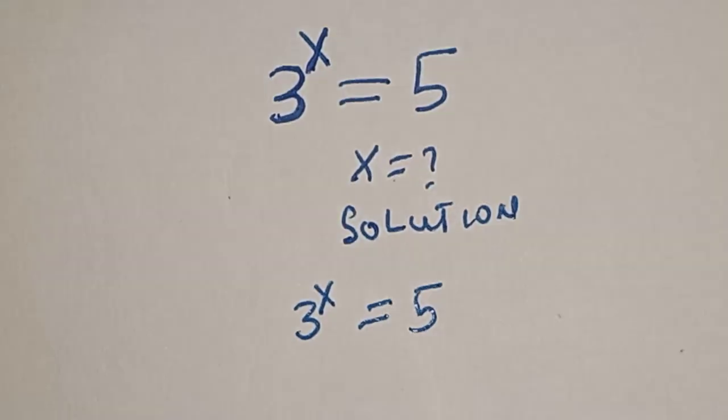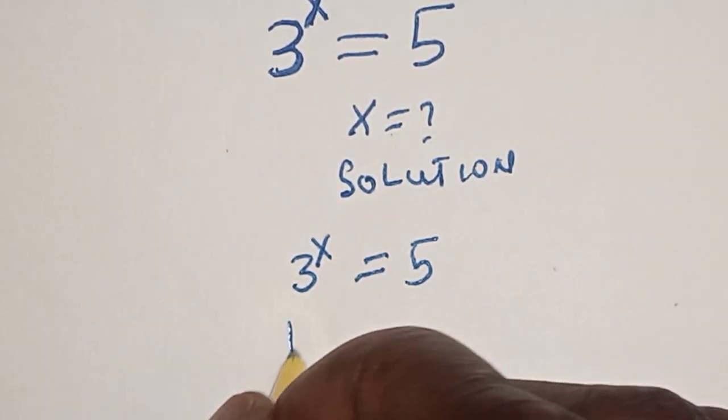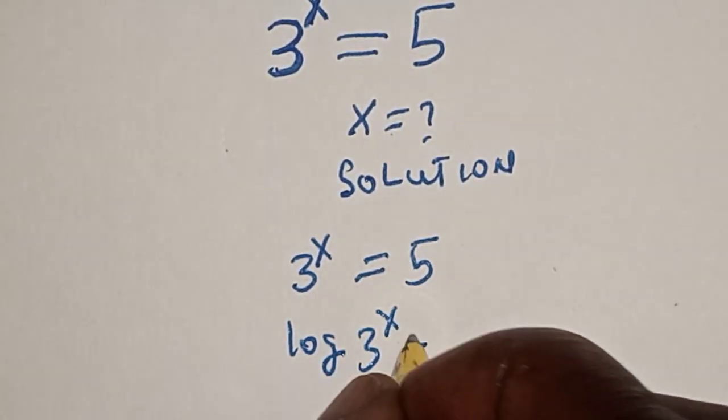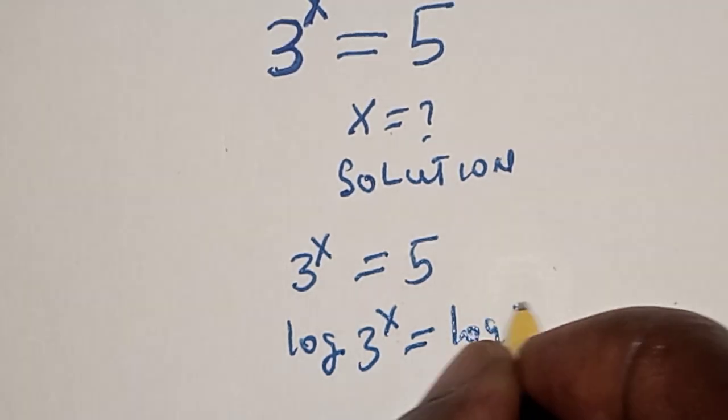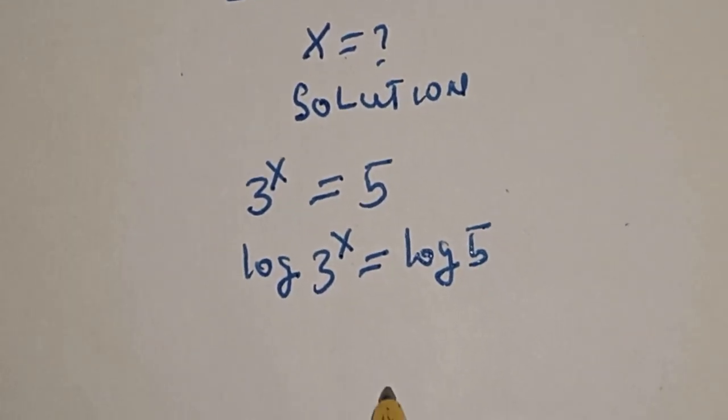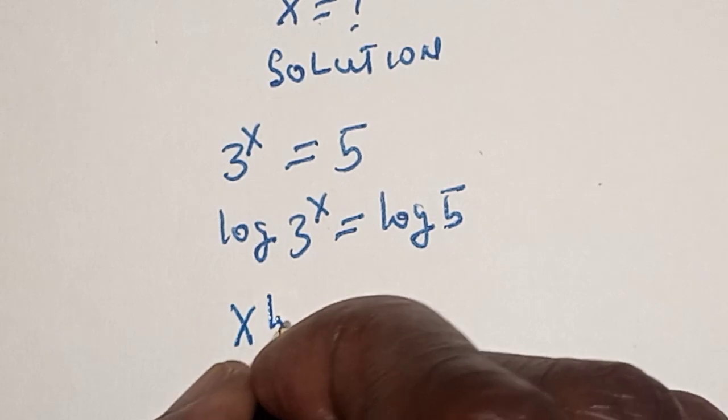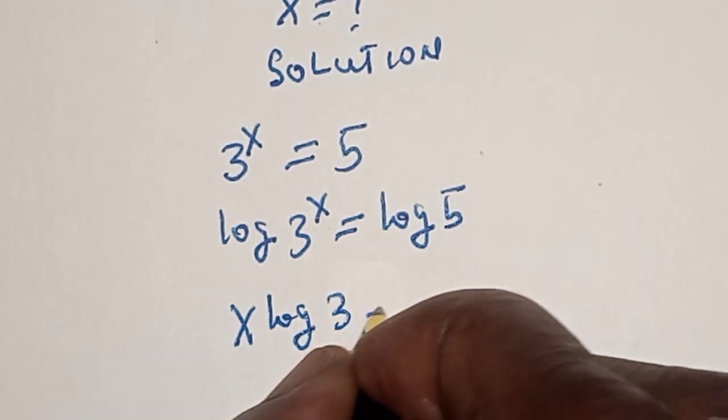Let's take the log of both sides. Log 3 raised to power s is equal to log 5, and this is s log 3 is equal to log 5.